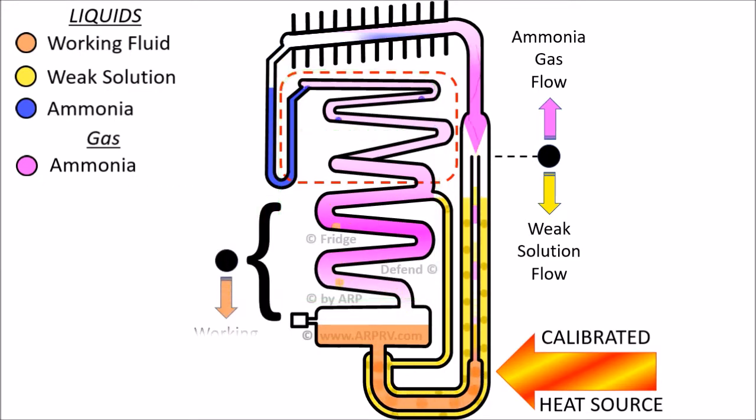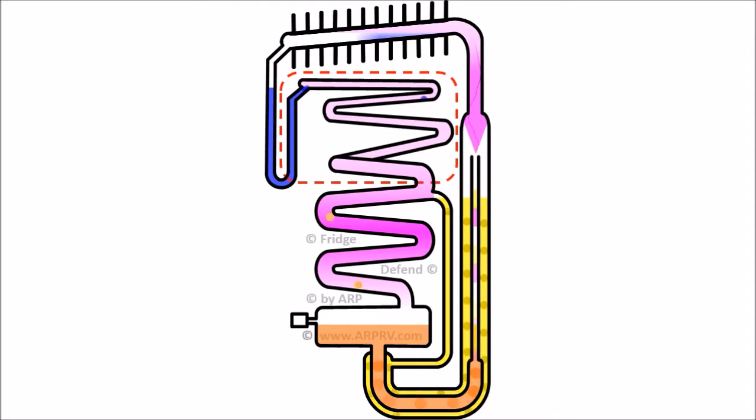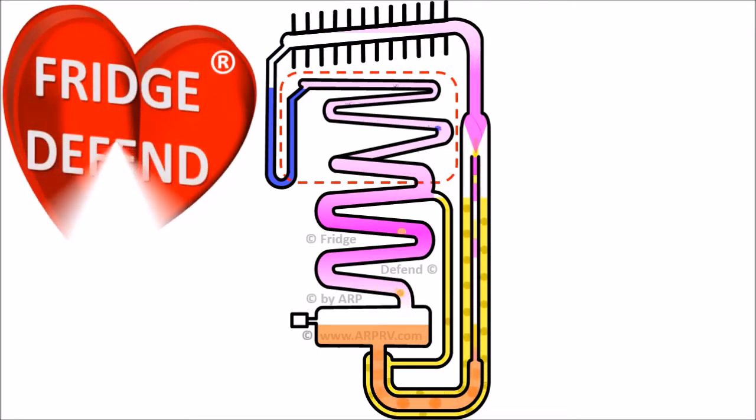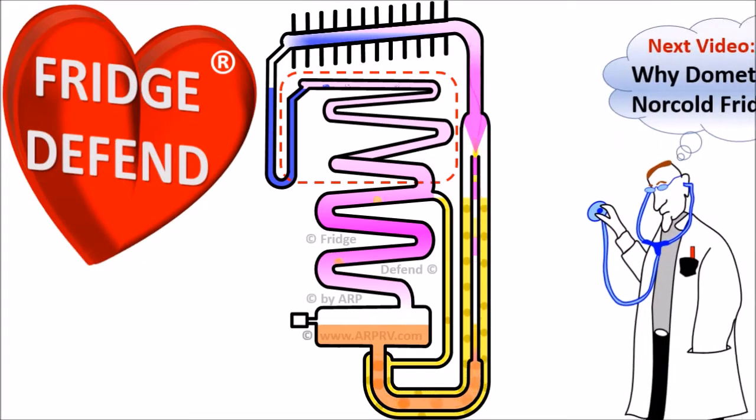Returning to the flow of the weak solution in the absorber coil, the ammonia gas is absorbed by the weak solution because ammonia has an affinity for water. Therefore, the working fluid is recombined and returned to the holding tank after the refrigeration process is completed.